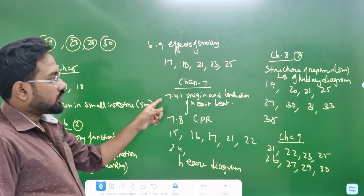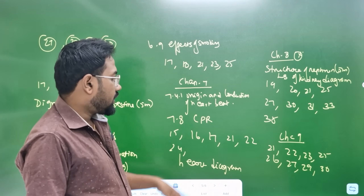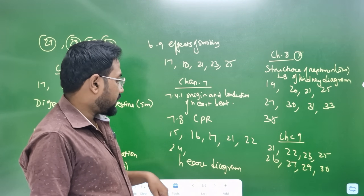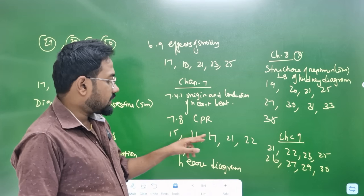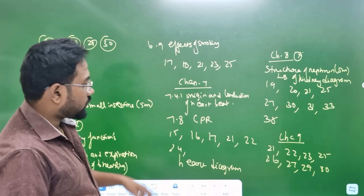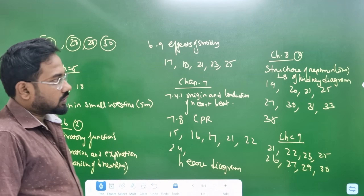Chapter 7 — origin and conduction of heartbeat. Paragraph number — 5 marks. CPR — section 7.8. Sections 15, 16, 17, 21, 22 — bookpack. Heart diagram — important.